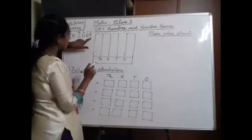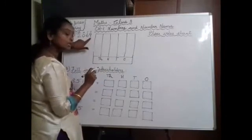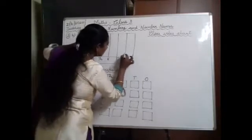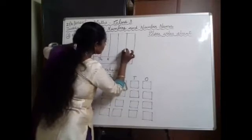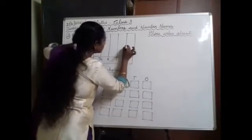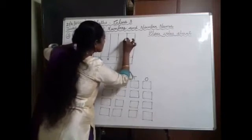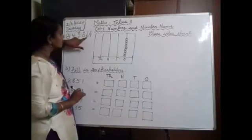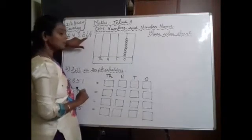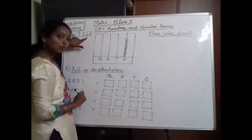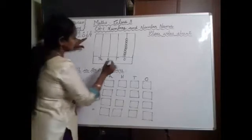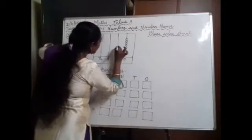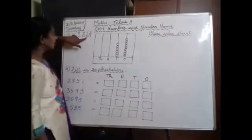The first digit is 9 in the 1s place. So draw 9 balls — 1, 2, 3, 4, 5, 6, 7, 8, 9. In the 10s place, 6 is there. So draw 6 balls — 1, 2, 3, 4, 5, 6.